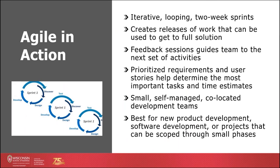Agile focuses on iterative looping sprints, typically about two weeks in duration, that when chained together create releases of work that can be used by customers and eventually lead to a fully realized solution. Review feedback sessions help guide the team on the next set of activities they should focus on. Agile needs prioritized requirements or user stories to help the team determine what's most important to work on and what they should be estimating.